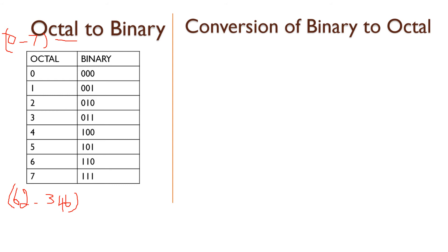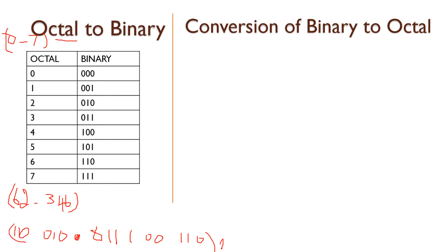For octal digit 6: binary is 110. For digit 2: binary is 010. For digit 3: binary is 011. For digit 4: binary is 100. For digit 6: binary is 110. So the binary form of octal 62.346 is 110 010 . 011 100 110.